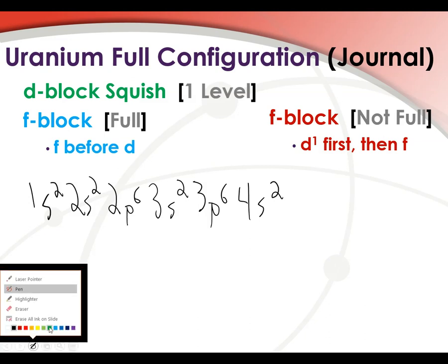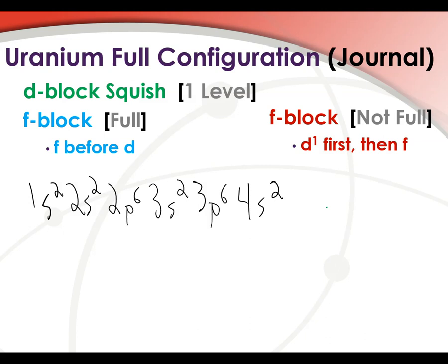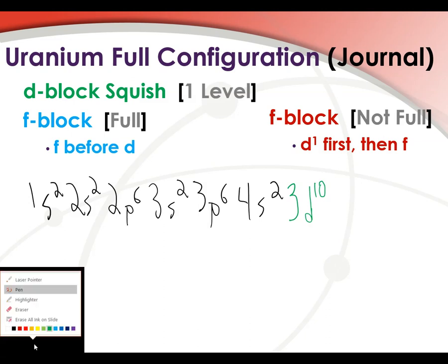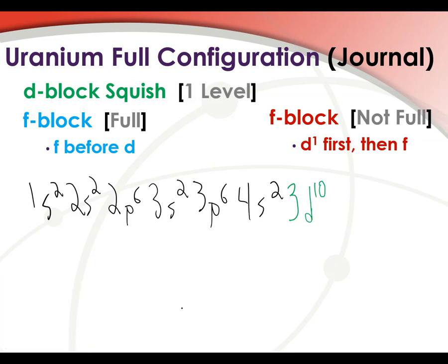Our first issue comes with this D-block. See, now that we're dealing with the D-block, we have that squish, so it's not 4d, it's 3d, and that wigs out a bunch of people because we're immediately going to go right back to level 4. So you have to understand that when it comes to the D-block, we're going to have that squish, and then we wind up with 4p6.